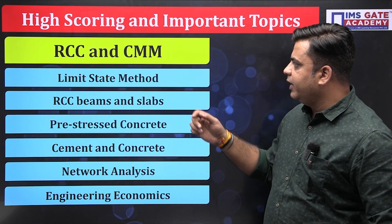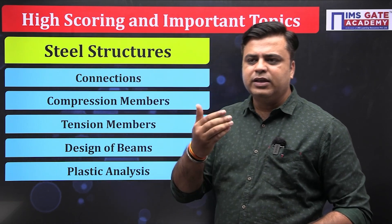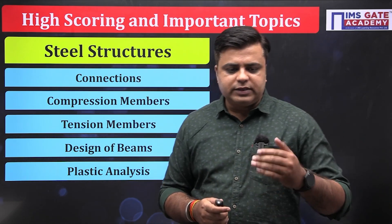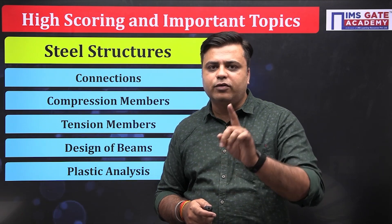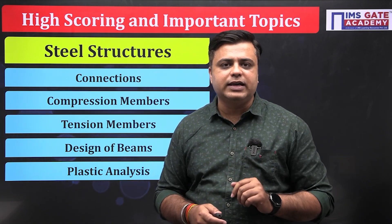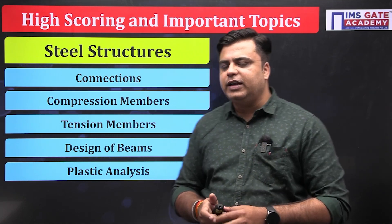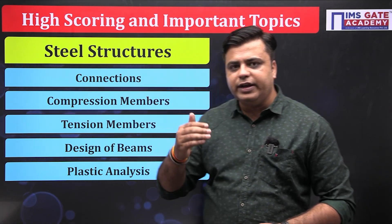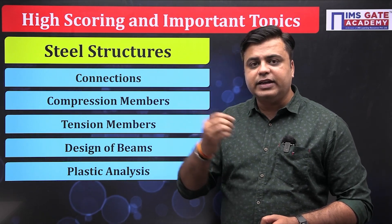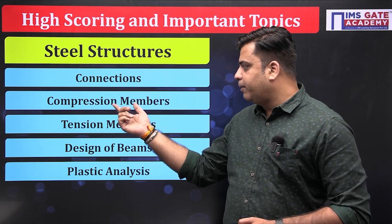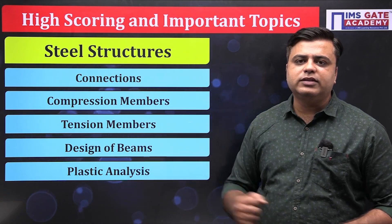For steel structures, fewer questions are asked — in GATE civil set one there was no question from steel, and in set two there was only one simple question from plastic analysis. The important areas of steel include connections such as bolted and welded connections and eccentric connections, compression and tension members, design of beams, and most importantly plastic analysis.